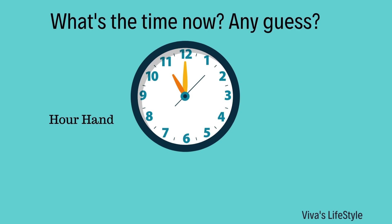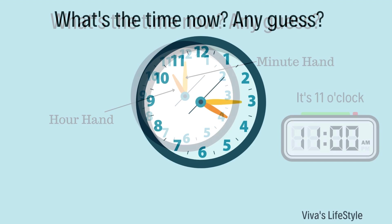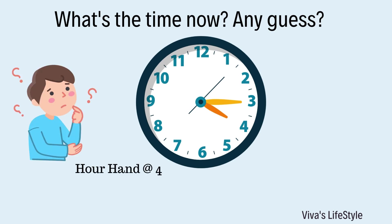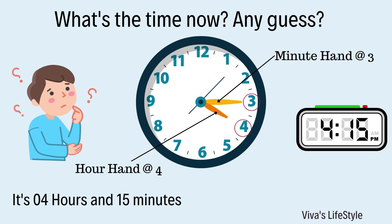What's the time now? The hour hand is at 11 and the minute hand is at 12. Please think and answer — it's 11 o'clock. Let's try one more example. The hour hand is at 4 and the minute hand is at 3. It's 4:15, that is 4 hours and 15 minutes.